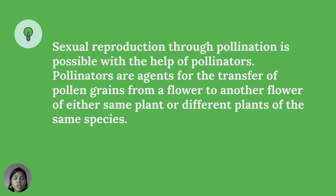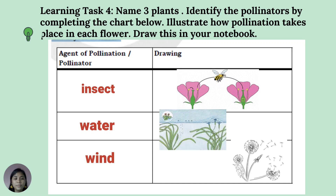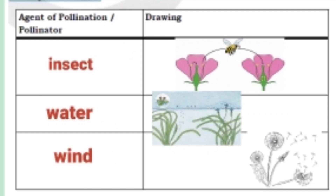Sexual reproduction through pollination is possible with the help of pollinators. Pollinators are agents for the transfer of pollen grains from one flower to another, either in the same plant or different plants of the same species. For Learning Task 4, name 3 plants and identify the pollinators by completing the chart, then illustrate how pollination takes place in each flower. Examples of agents of pollination include insects, water, and wind.